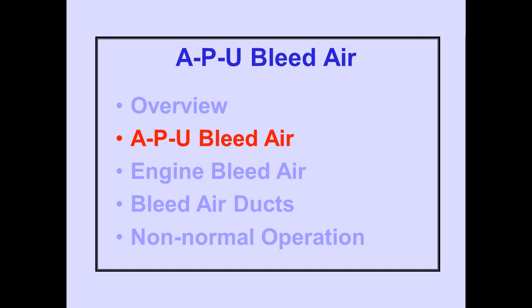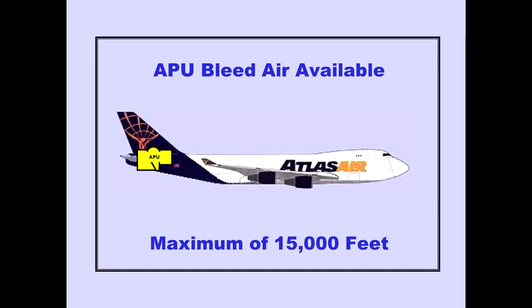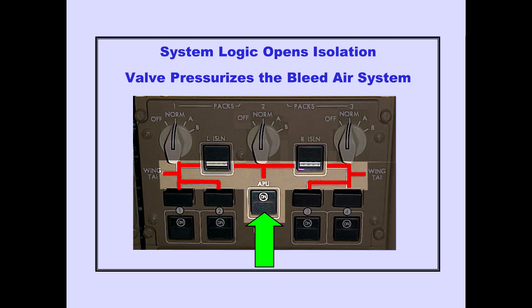We will now discuss APU bleed air. APU bleed air may be used on the ground or in flight. A check valve prevents backflow of bleed air from the duct to the APU. APU bleed air is available up to a maximum of 15,000 feet. Pushing the APU bleed air switch on allows system logic to open the APU bleed air isolation valve and pressurizes the bleed air system.